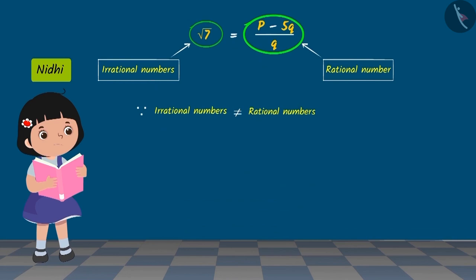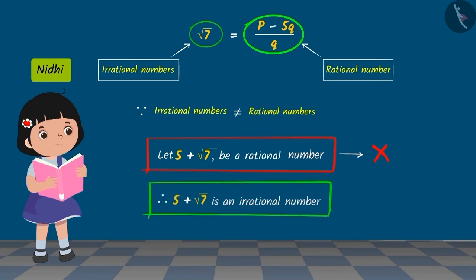Hence, Nidhi tells Riddhi that 5 plus square root of 7 is a rational number is a wrong assumption because what we have obtained here is contradictory to it. Hence, we can say that 5 plus square root of 7 is an irrational number.